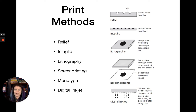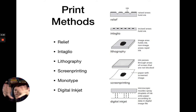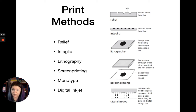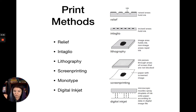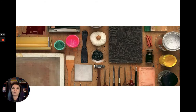Screen printing is where you pass ink through areas of a screen that are not blocked. On a mesh screen, you use an emulsion that fills in the holes and blocks the areas you don't want to print—kind of the inverse of the image. In digital inkjet, a much more contemporary invention, microscopic nozzles inside the printer spray droplets of ink onto paper according to whatever data it gets from the digital file.